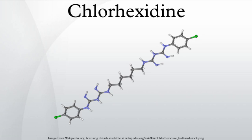Chlorhexidine is deactivated by forming insoluble salts with anionic compounds, including the anionic surfactants commonly used as detergents in toothpastes and mouthwashes, anionic thickeners such as carbomer, and anionic emulsifiers such as acrylate C10-30 alkyl acrylate cross-polymer, among many others. For this reason, chlorhexidine mouth rinses should be used at least 30 minutes after other dental products. For best effectiveness, food, drink, smoking, and mouth rinses should be avoided for at least one hour after use. Many topical skin products, cleansers, and hand sanitizers should also be avoided to prevent deactivation when chlorhexidine is meant to remain on the skin.